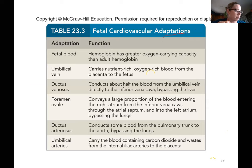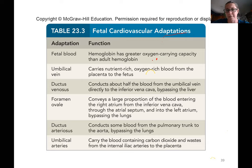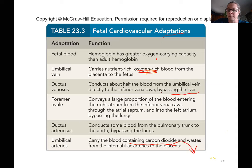To wrap up fetal circulatory adaptations, here's table 23.3. The fetal hemoglobin has a greater affinity for oxygen compared to adult hemoglobin. The umbilical vein carries oxygen-rich blood; the umbilical arteries carry oxygen-poor blood with wastes back to the placenta. The ductus venosus bypasses the liver, the foramen ovale bypasses the lungs and the right ventricle, and the ductus arteriosus bypasses the lungs and sends blood straight to the aorta from the right ventricle.